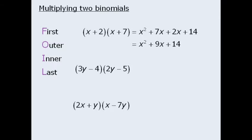Now let's expand the second product. When we multiply the first terms here we get positive 6y squared. When we multiply the outer terms we get negative 15y. When we multiply the inner terms we get negative 8y. And when we multiply the last terms we get positive 20.